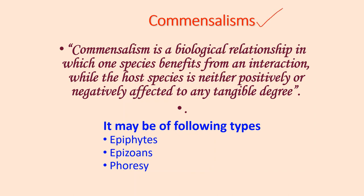The third category of positive relationship is commensalism. It is the simplest kind of interspecific positive interaction in which the smaller member, called the commensal, is benefited while the larger member, called the host, is neither benefited nor harmed. A commensal may get food, habitat, transport, or support. Like mutualism, the commensal may be permanently associated with the host or contact may be temporary. Most commensals are not host-specific while some are strictly host-specific.